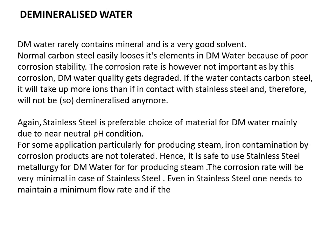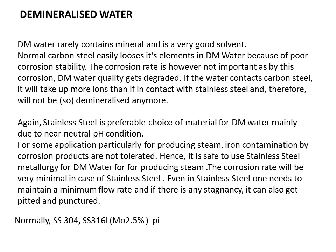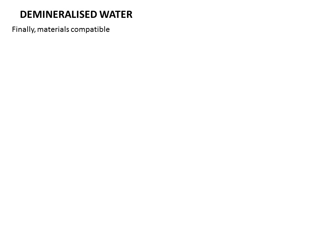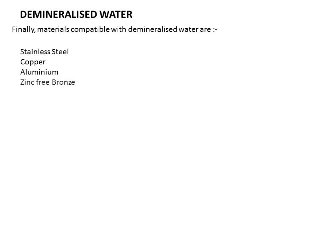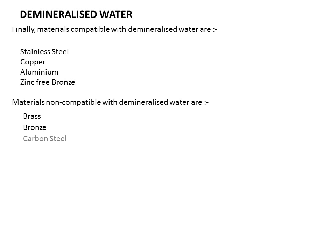Even with stainless steel, one needs to maintain a minimum flow rate; any stagnancy can cause pitting and puncturing. Normally, SS304 and SS316L containing molybdenum (~2.5%) are used for demineralized water. Materials compatible with demineralized water are stainless steel, copper, aluminium, and zinc-free bronze. Materials non-compatible with demineralized water are brass, bronze, carbon steel, galvanized steel, and chromate steel.